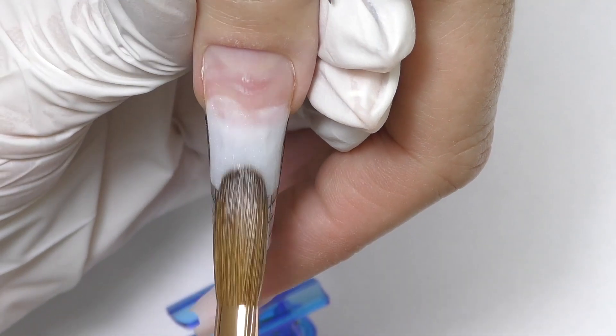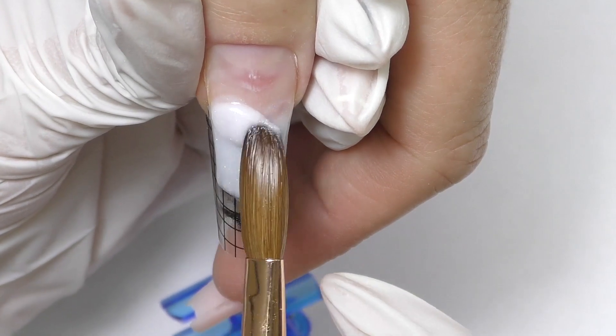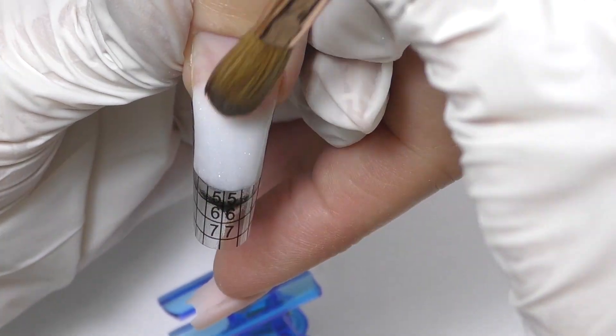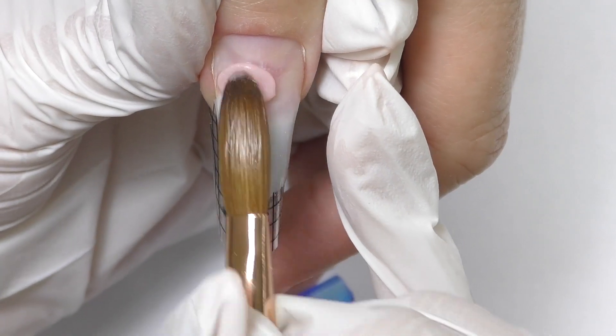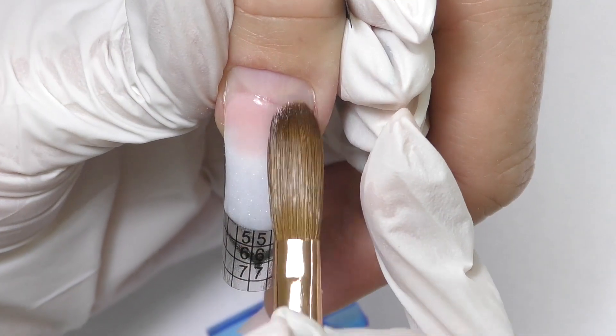So I add another bead in the center and stretch it down and another one creating the fade. So I'm stretching it towards the free edge as well as towards the cuticle and then I add the perfect nude.